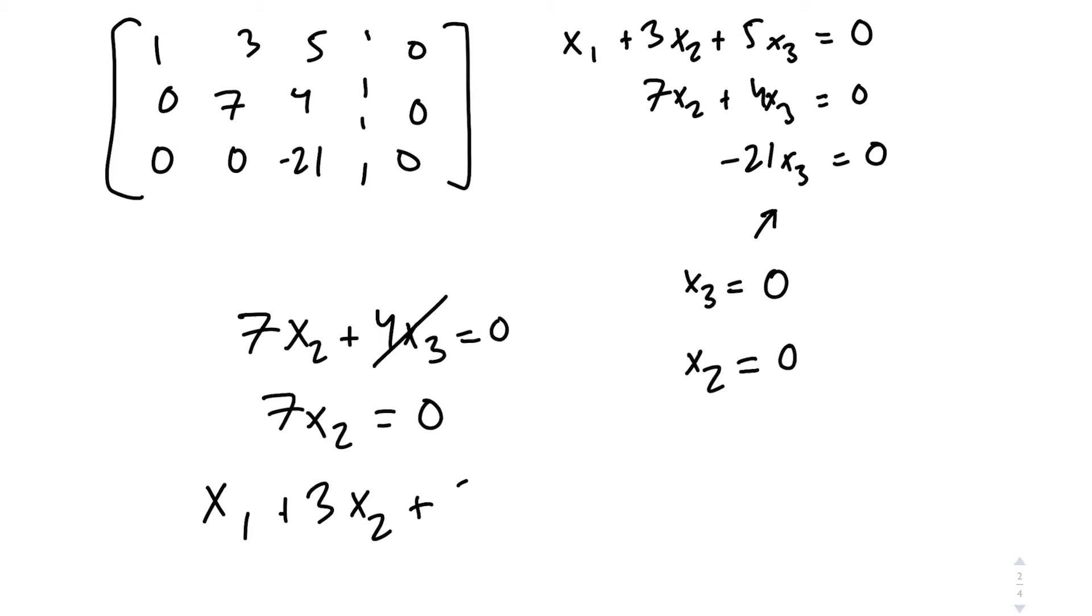But if not, we're going to keep going. x1 plus 3x2 plus 5x3 equals 0. So we've determined x3 is 0, get rid of her. x2 is 0, get rid of her. So we have x1 equals 0. This one, we didn't even have to divide anything by it. We just got x1 equals 0.